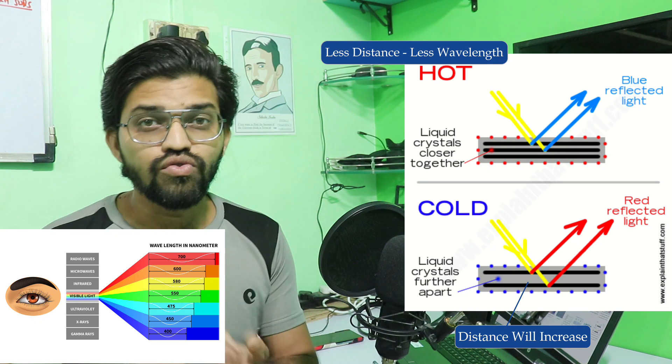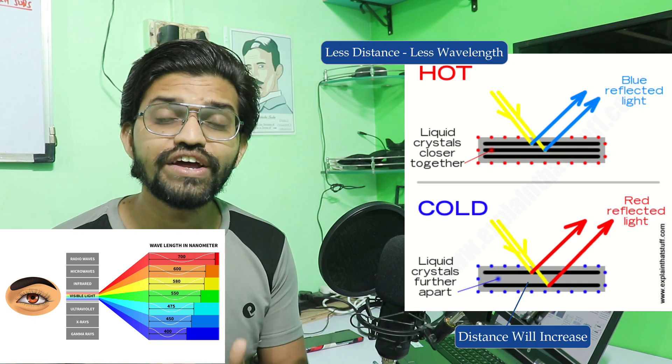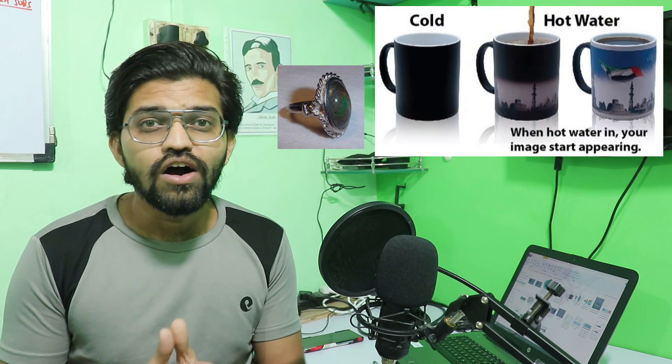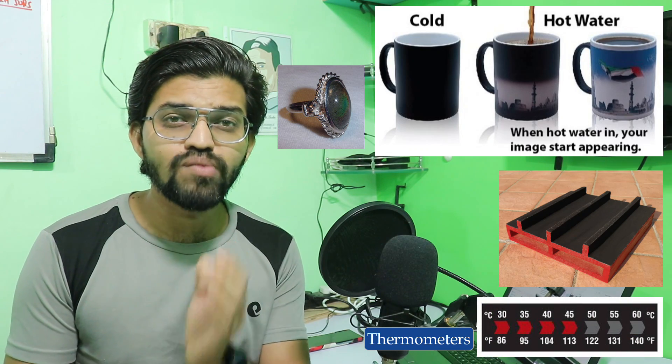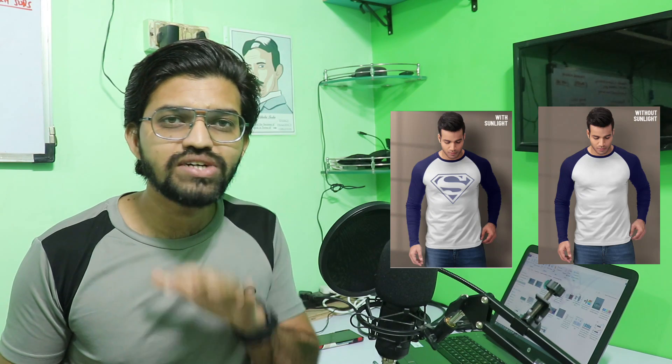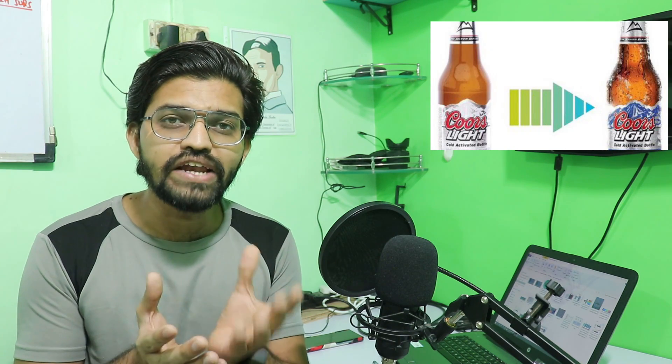Thermochromatic paints are used in many creative applications such as magic mugs, mood rings, X-tiles, chemical indicators, labels, pigments, paints, thermometers, and thermochromatic clothing. For example, UV-activated t-shirts appear as a normal t-shirt indoors, but when exposed to sunlight, a hidden logo — like a Superman logo — appears because it is thermochromatically painted, hidden at lower temperatures and revealed at higher temperatures.